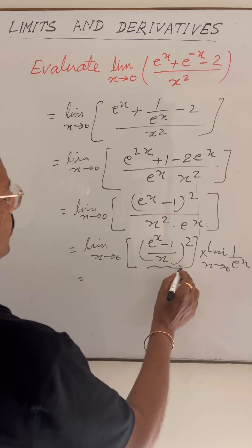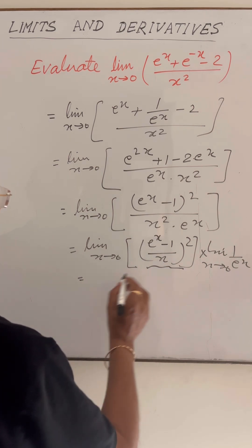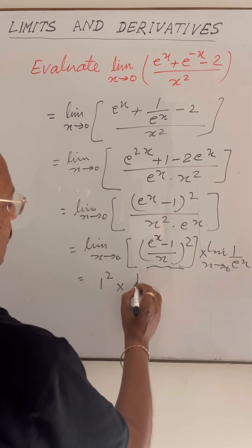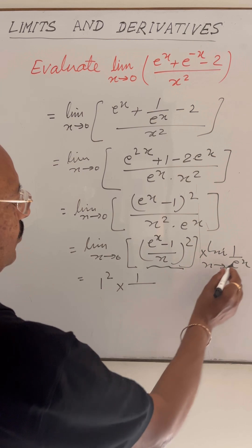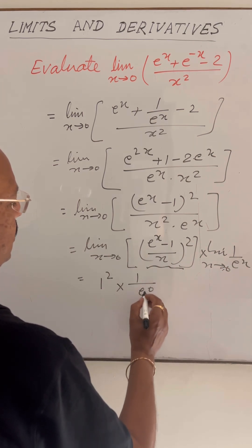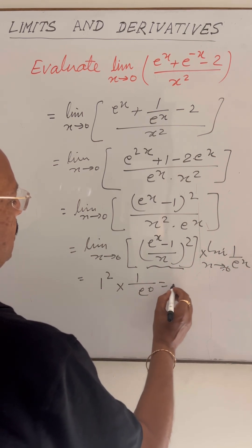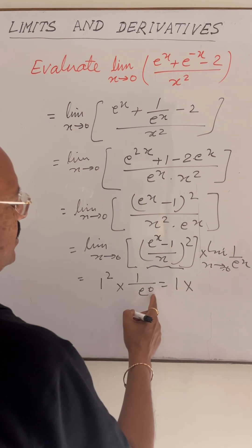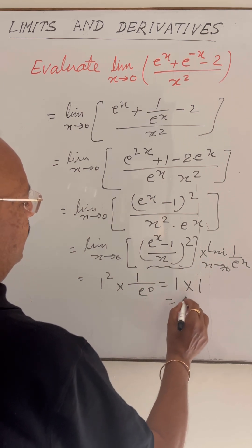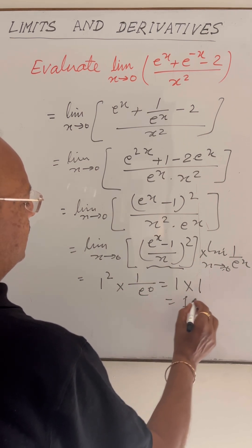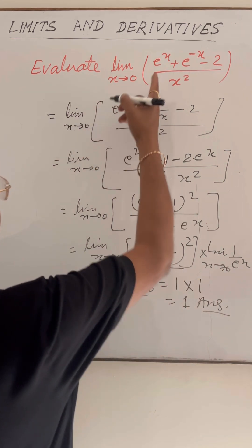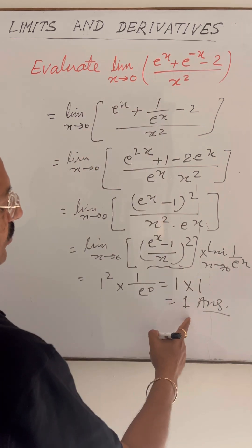By the standard formula we know this limit is 1. So this is 1 squared, multiplied by 1 upon e to the power 0, which is 1 upon 1. So the final answer for the value of this limit is 1.